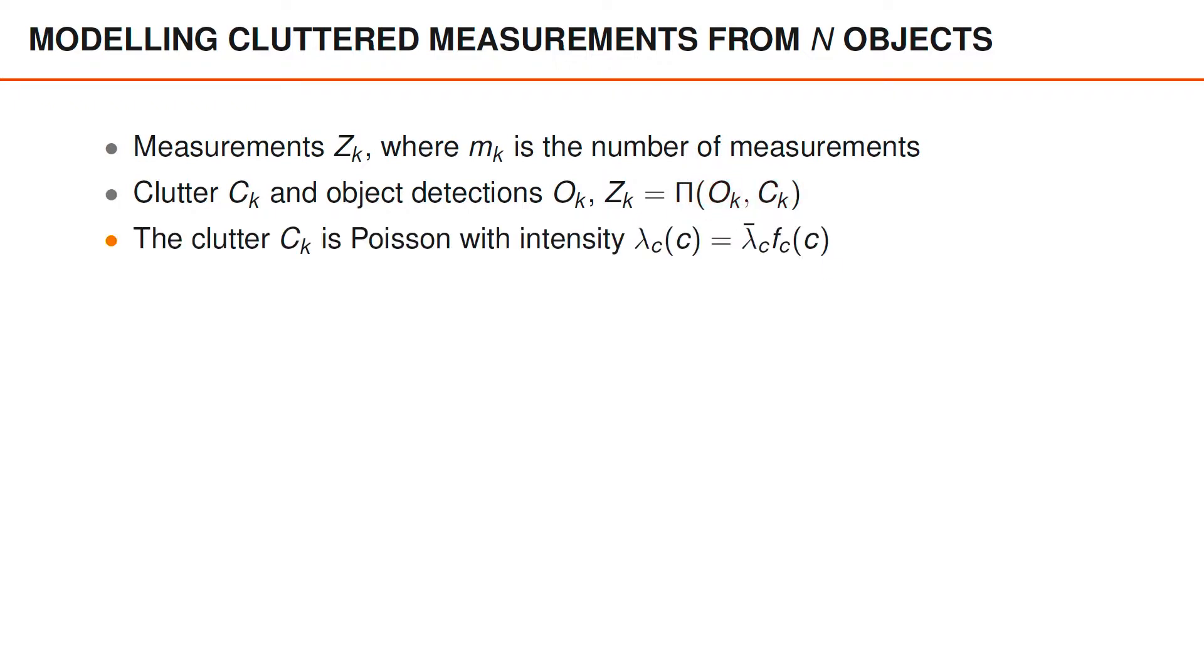Like before, the clutter is Poisson, it has some intensity lambda C, which we can also describe as the product of a Poisson rate lambda bar and a spatial density F.